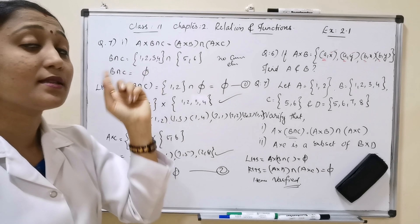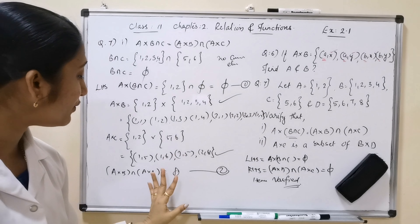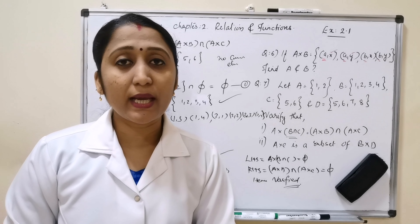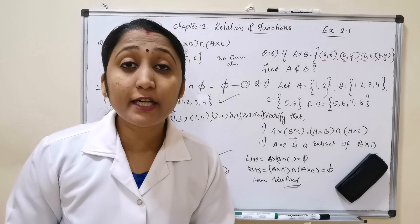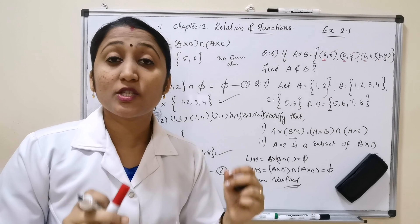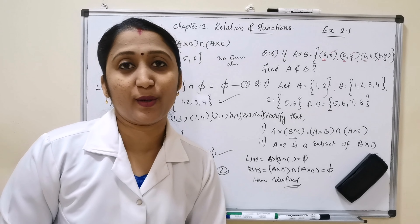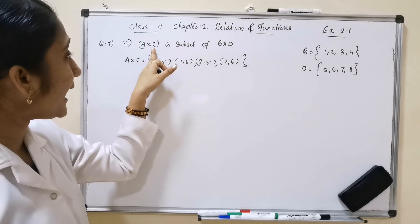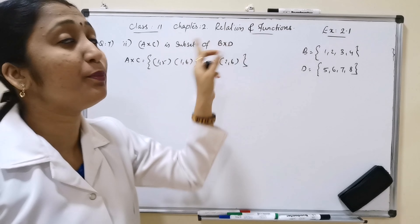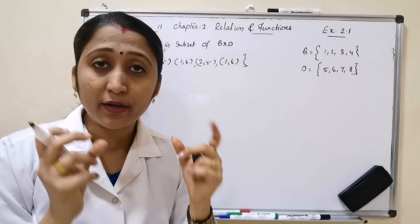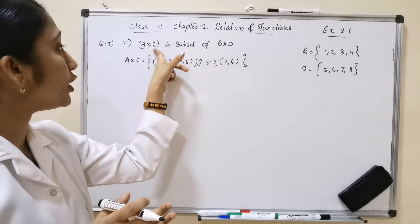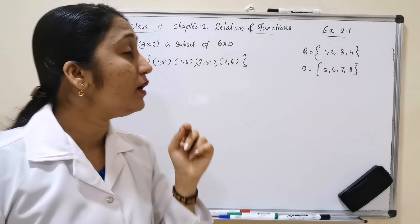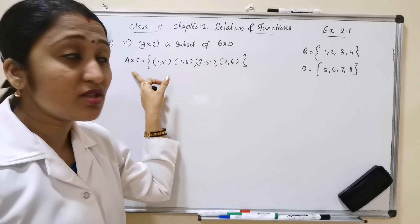To summarize: LHS = A×(B∩C) = ∅, and RHS = (A×B)∩(A×C) = ∅. So LHS equals RHS, hence this is verified. Intersection means the common elements between sets — since B and C share no common elements, B∩C is null set, giving us null set on both sides.